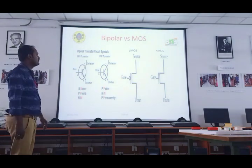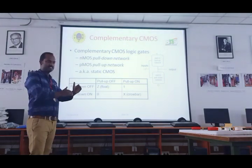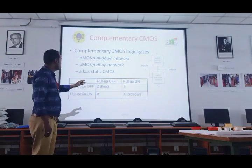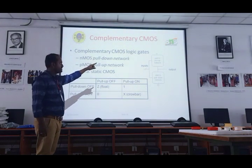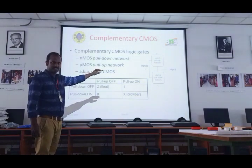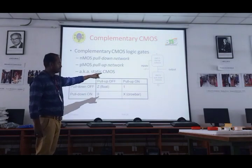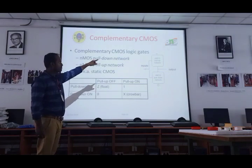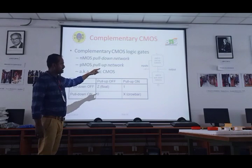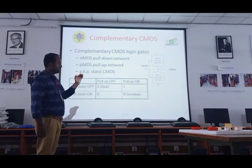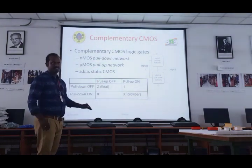Next, complementary MOSFET. Complementary means one is connected when the other is not. CMOS — complementary metal oxide semiconductor — consists of PMOS and NMOS. PMOS is the pull-up transistor — pulling towards VDD, that is the power supply. NMOS is the pull-down transistor — pulling down towards ground. If NMOS is on, PMOS is off. If PMOS is on, NMOS is off. That is complementary.